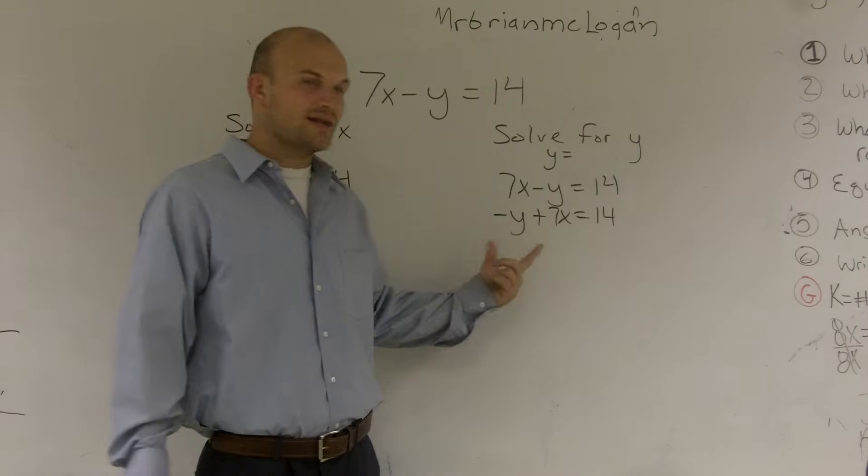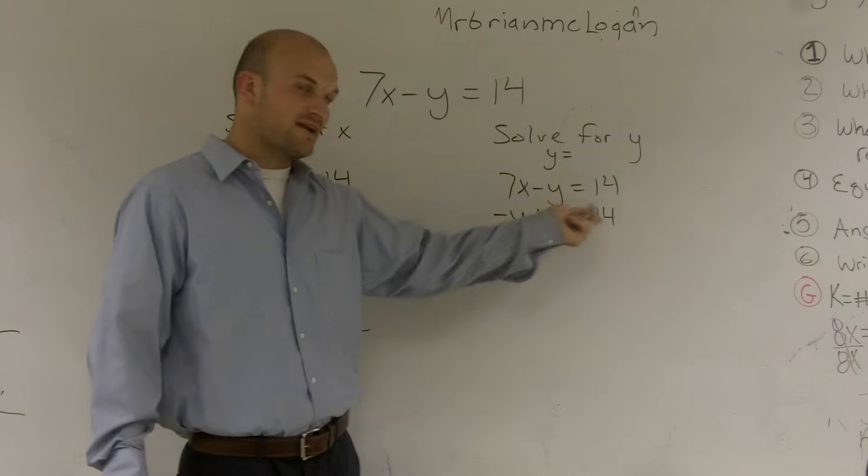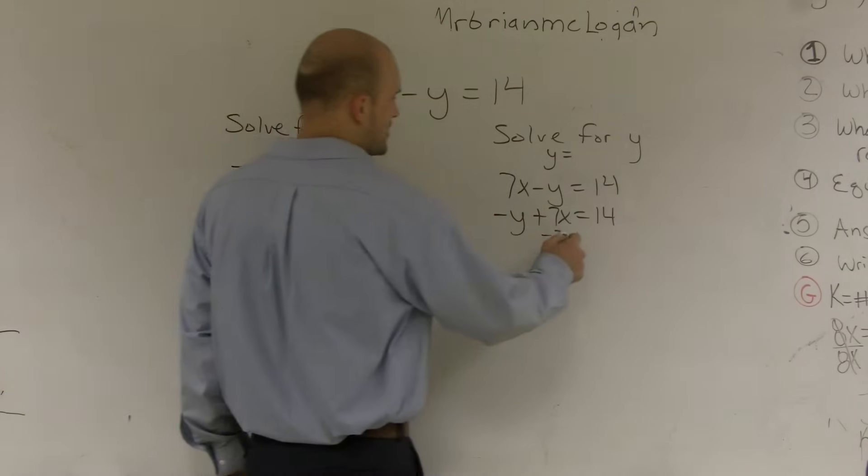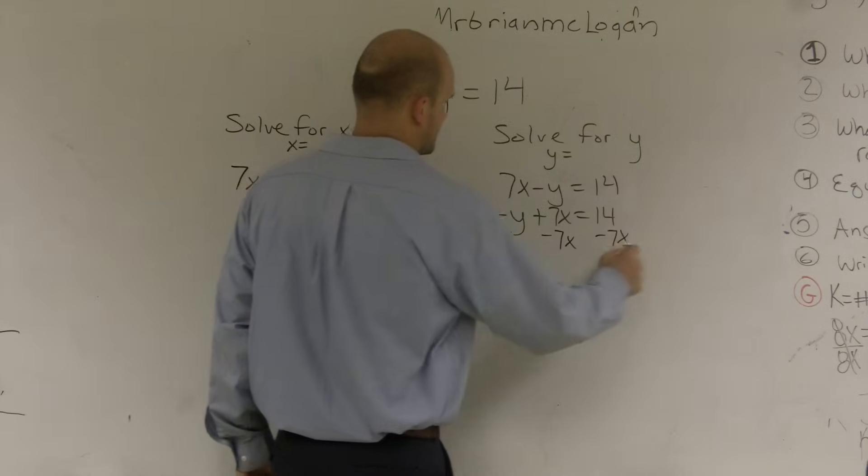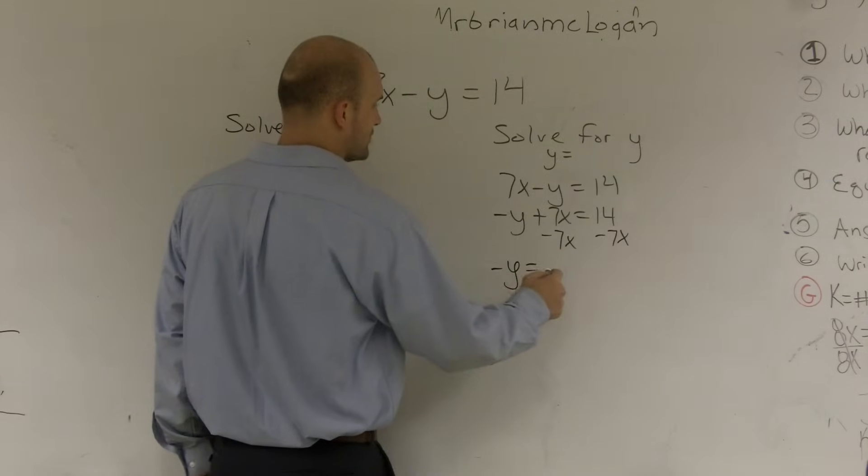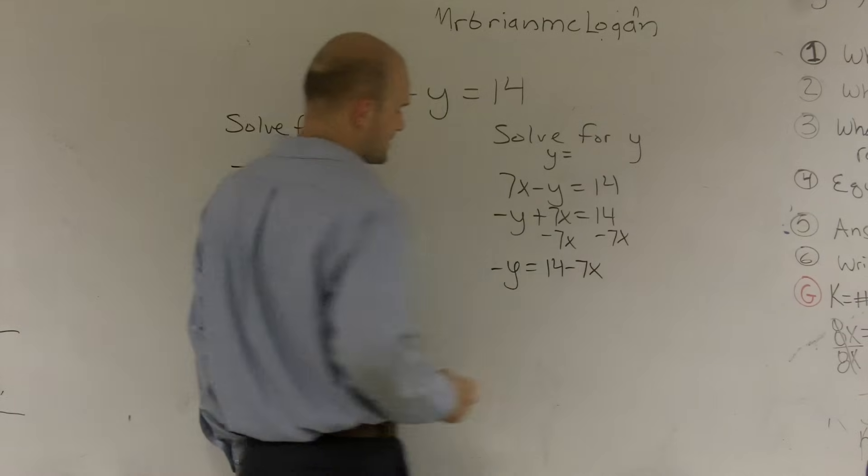However, when you rewrite it like this, you can see that I'm adding a 7x to my y. So I'm going to subtract the 7x, and I'll get negative y equals 14 minus 7x.